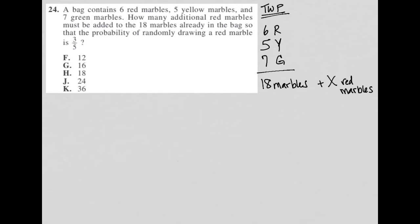How many additional red marbles must be added to the 18 marbles already in the bag so that the probability of randomly drawing a red marble is three out of five? Probability on this test will always mean a fraction where the numerator is what you want—in this case, a red marble—over total. In this case, the total number of marbles. So we know that we want that fraction to be three over five.